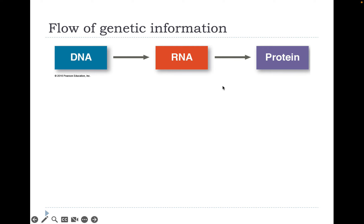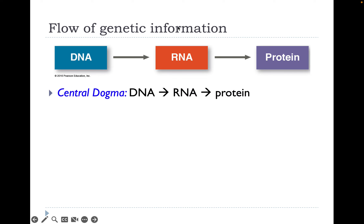We have DNA. DNA can be turned into RNA, and RNA somehow gets us to proteins. We call this flow of genetic information the central dogma in biology. DNA begets RNA, begets protein.